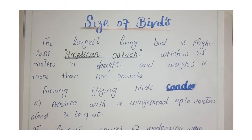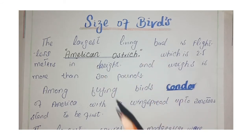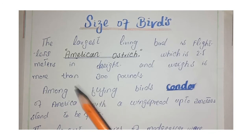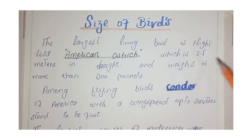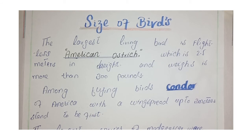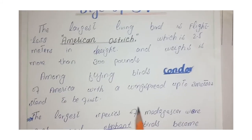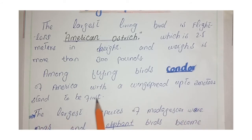Regarding the size of birds: the largest living bird is the flightless American ostrich, which cannot fly. It is 2.5 meters in height and weighs more than 300 pounds. Among flying birds, the condor of America, with wings spread up to 3 meters, stands first.